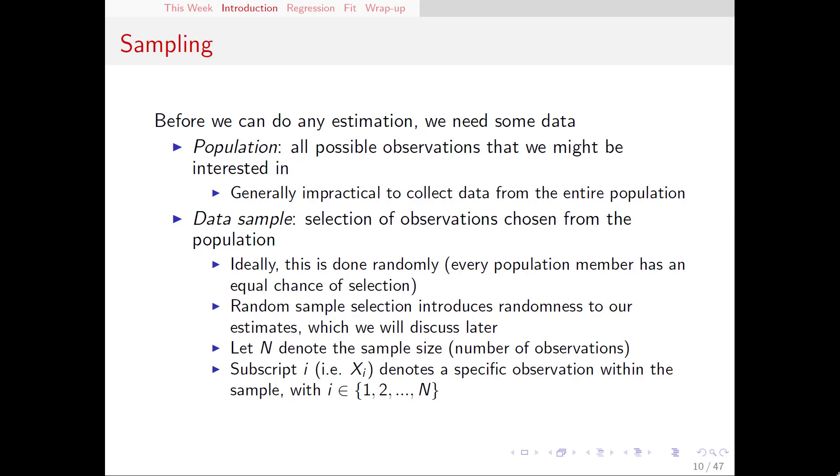In statistics, we define the population as all of the possible observations that are out there that we might be interested in. For example, we might be interested in the entire population of a country—it could be millions upon millions of people. Now if we were able to actually find the entire population, then we would know what the relationship is. This is typically impractical and we have to do the next best thing.